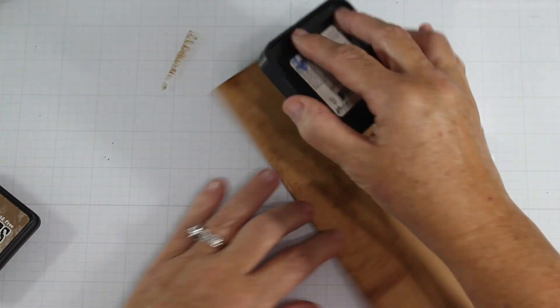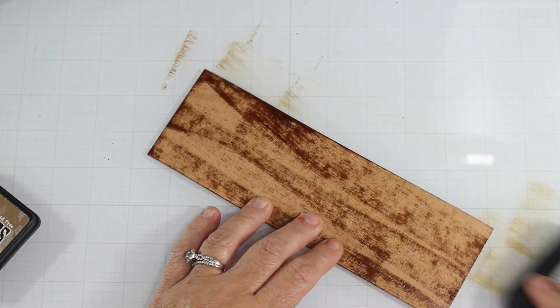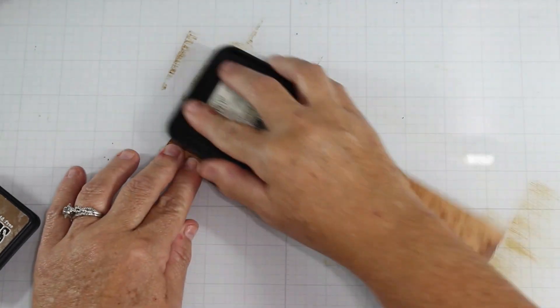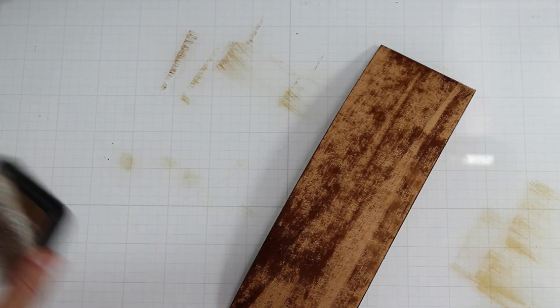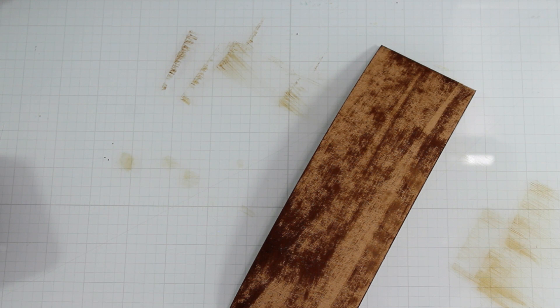Here I took a piece of craft cardstock and I'm making my own wood grain by using some Gathered Twigs Distress Ink. And I am just rubbing that across the paper, dragging that across the paper, just to make a faux bowling alley.